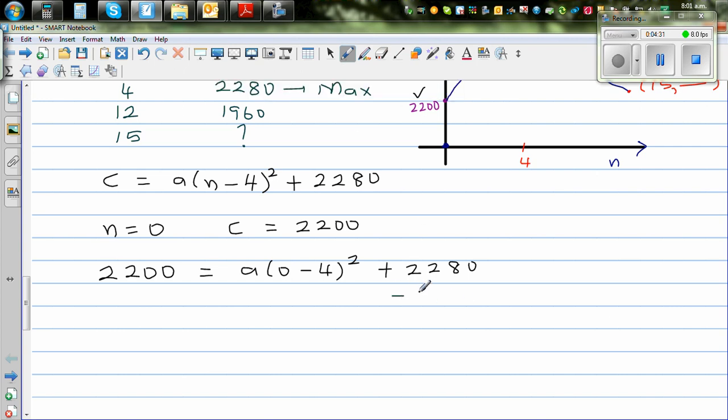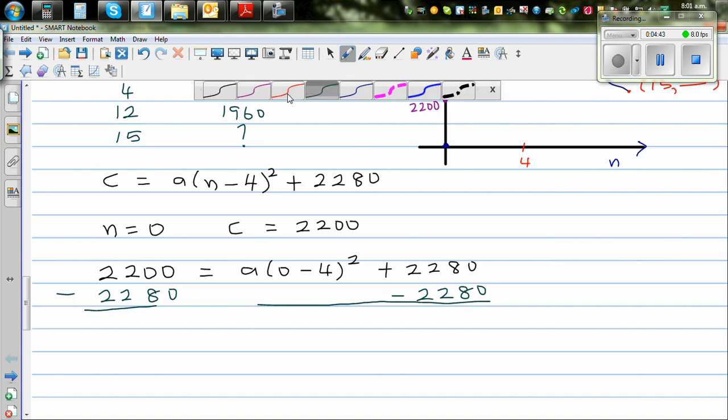Let us take away 2280 from both sides. If you take away 2280 from this side, you have to take away 2280 from this side. This is where you have to be super careful. So this is A times negative 4 squared. 2280 take away 2280 is minus 80. So minus 80 equals 16A.